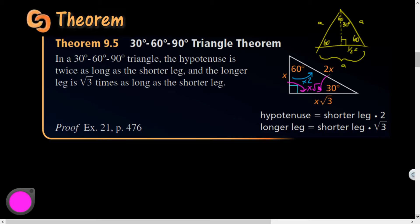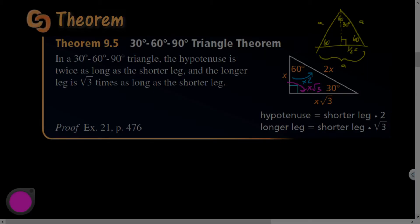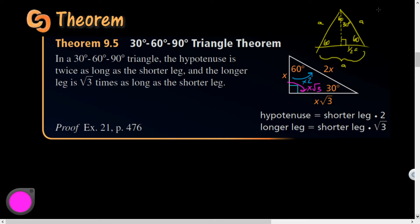If you want to go from the hypotenuse to the long leg, I don't recommend doing it directly. I'd rather divide by 2 to get to the short leg first, then multiply by √3. Technically you could multiply by √3/2, but going through the short leg is easier.